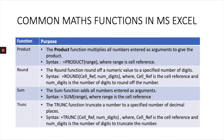The second function is ROUND. The ROUND function rounds a numeric value to a specified number of digits. The syntax is: =ROUND(cell_reference, number_digits), where cell_reference is the cell and number_digits is the number of digits to round off the number.